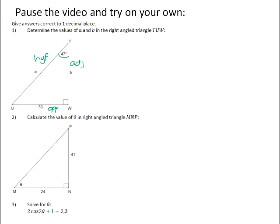So the ratio that combines opposite and hypotenuse is the sine ratio. So the sine of 47 degrees will be equal to the opposite side, which has a measure of 30, over the hypotenuse, which is A.